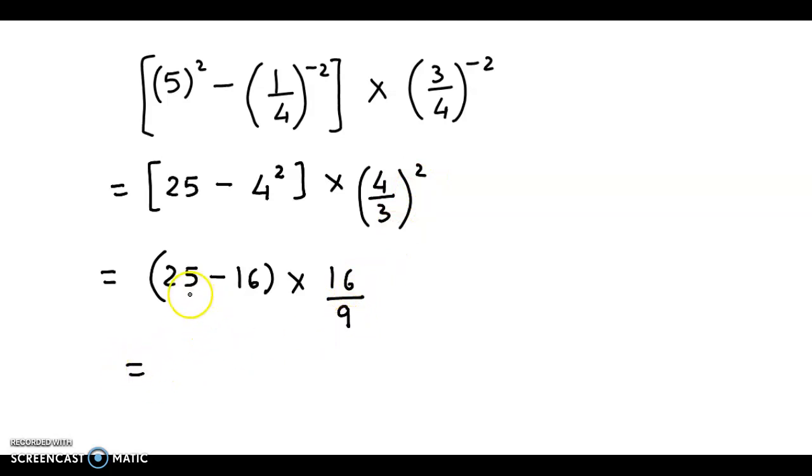Next 25 minus 16 is 9. So we have 9 into 16 upon 9. So 9 cancels out with 9. So the final answer is 16.